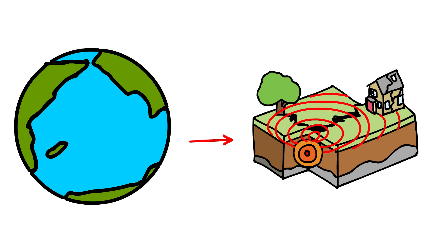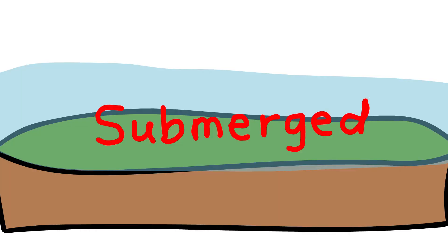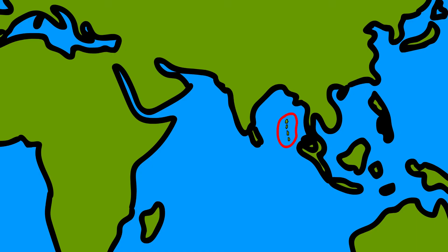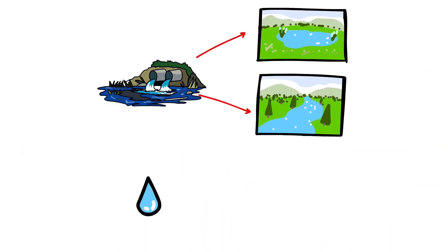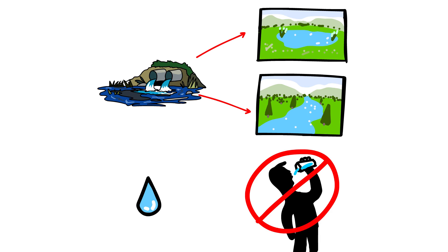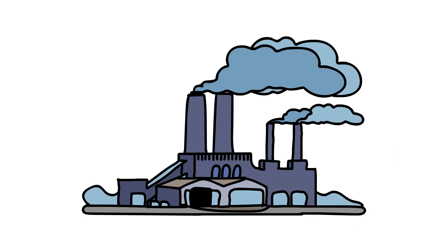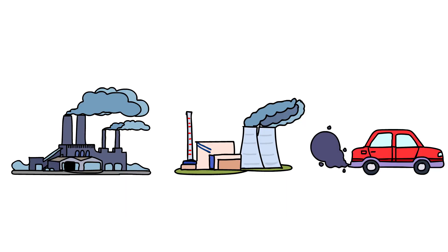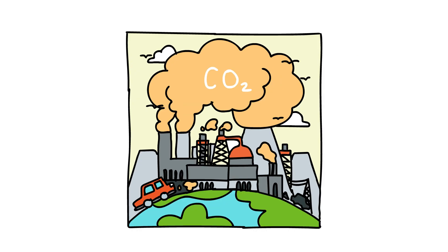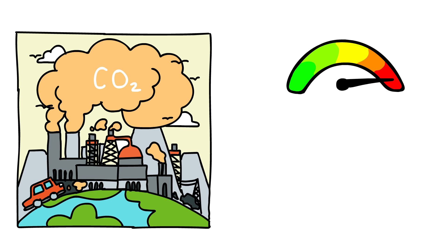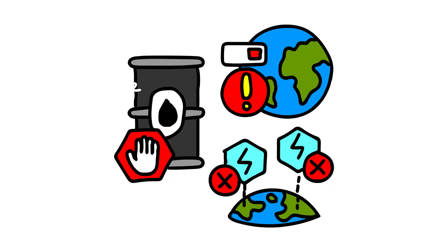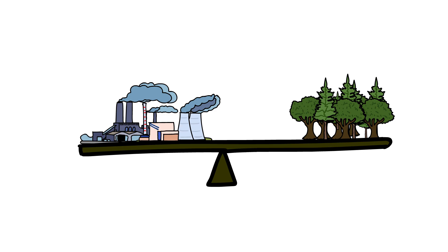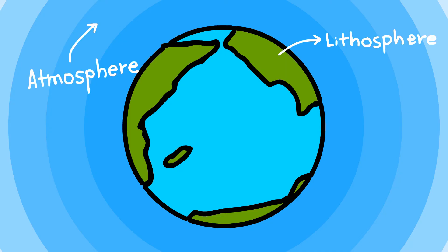Similarly, the Earth's surface may be changed due to natural calamities like earthquakes. For example, there could be submersion of land, as happened in the case of the tsunami recently, where parts of Andaman and Nicobar Islands were submerged underwater. Discharge of waste material into lakes and rivers makes the water unsuitable for human use and damages other forms of life. Emissions from industries, thermal power plants, and vehicles pollute the air. Increase in the amount of CO2 leads to increase in global temperatures, which is termed as global warming. There is thus a need to limit the use of Earth's resources to maintain the balance of nature between the lithosphere, the atmosphere, and the hydrosphere.